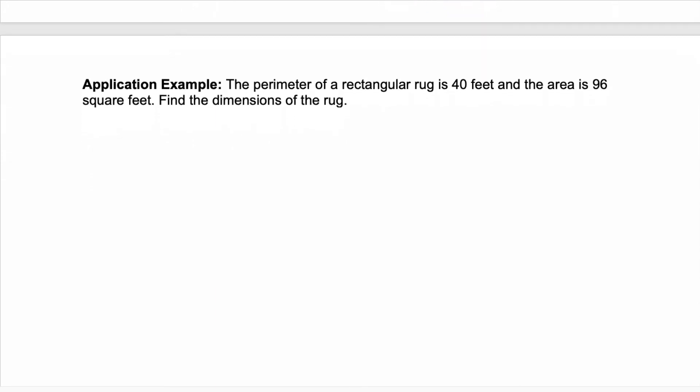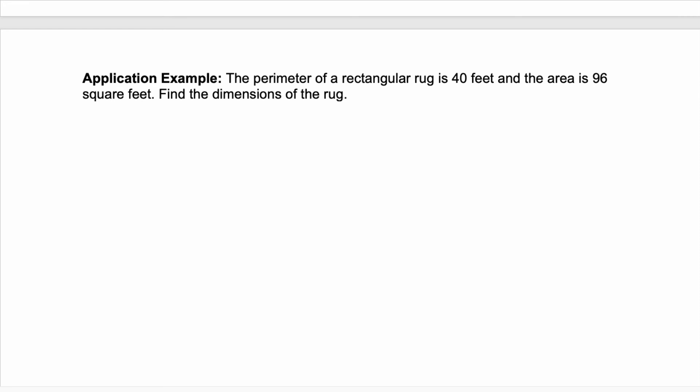Let's look at an application example. Remember we're solving a system of nonlinear equations in two variables. So we need to end up with two variables and two equations. The perimeter of a rectangular rug is 40 feet and the area is 96 square feet. Find the dimensions of the rug. Well I'm a visual person so I'm going to draw a picture of my rectangular rug. And I know that my rug has a length and a width. I notice the key words perimeter and area. Perimeter is two times the length plus two times the width. And area is equal to the length times the width.